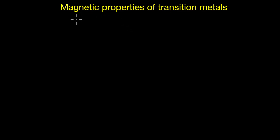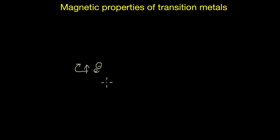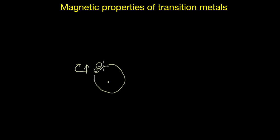In this video we will explore the magnetic properties of transition metals. An electron is a negatively charged species that spins on its own axis and also moves around the nucleus. This orbital motion and the spin create a tiny magnetic field around the electron.